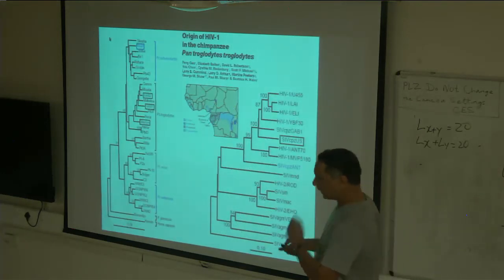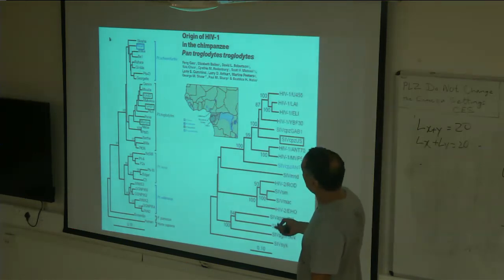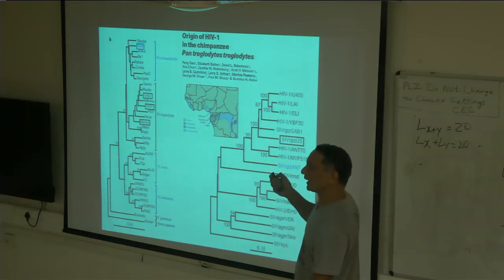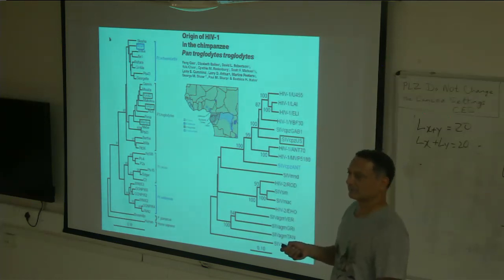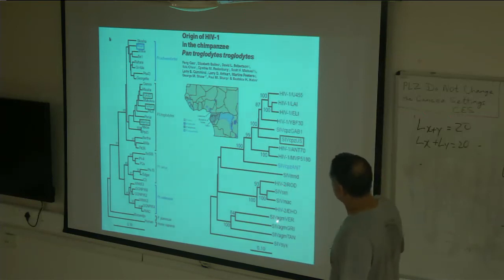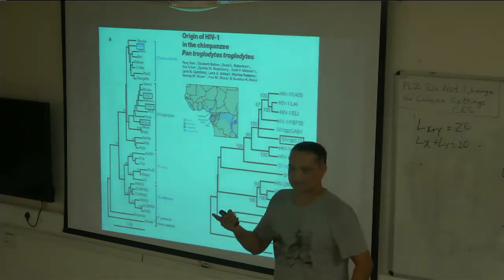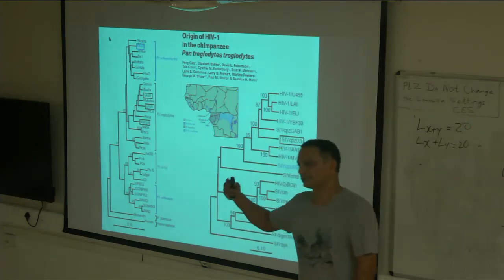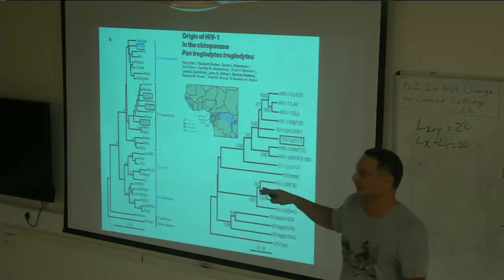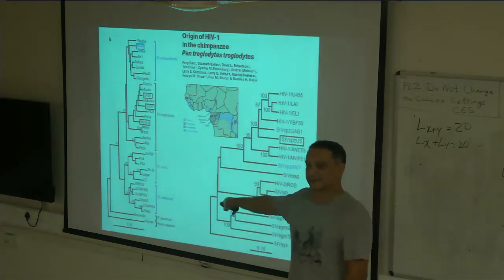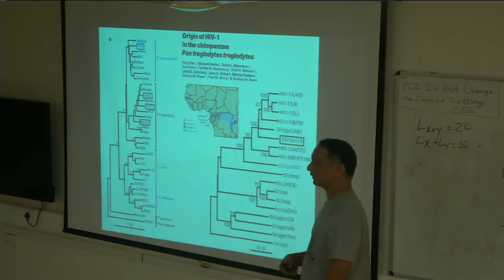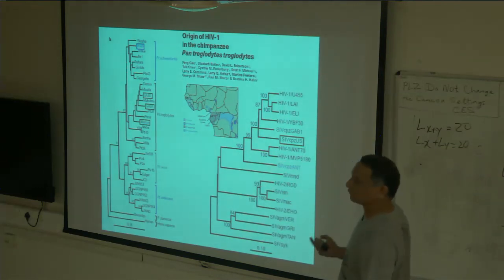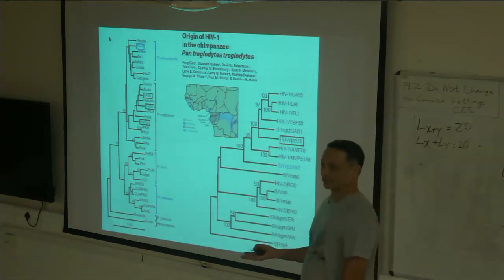A very exciting paper was able to pinpoint the origin of HIV-1 — from which population and which subspecies of chimpanzee humans got HIV-1. We have two strains of HIV: HIV-1 came from chimpanzees, and HIV-2 from some other cercopithecine monkey in Africa. All this information is thanks to phylogenetics — otherwise there was no way of knowing where these things came from. Basically, what we call HIV is SIV — Simian Immunodeficiency Virus.